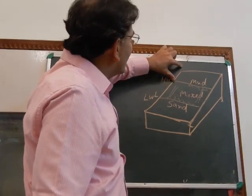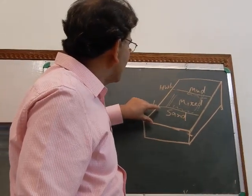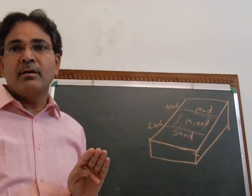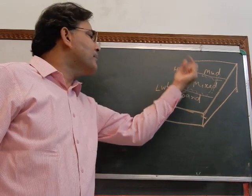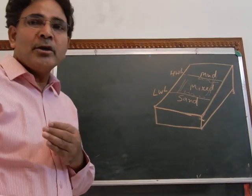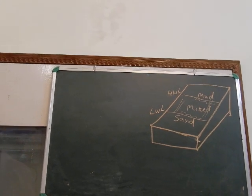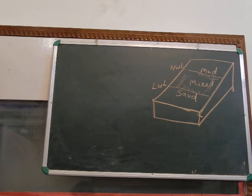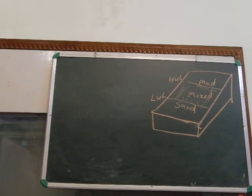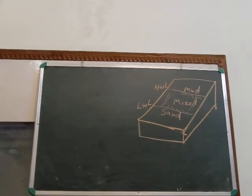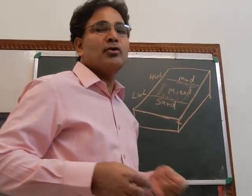The supratidal zone, towards land from the high water level, is subaerially exposed. The subtidal zone, towards the ocean from the low water level, is always submerged. The intertidal zone, located between the low and high water levels, is exposed for some time and then submerged again. The key processes are the flood tidal current, ebb tidal current (bipolar currents), and wind-driven waves, which transport sediment in alternating directions. Tidal channels also transport sediment.